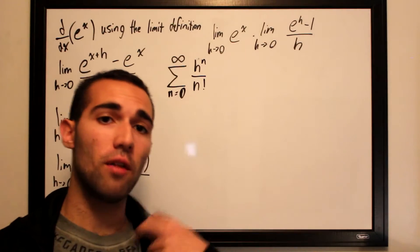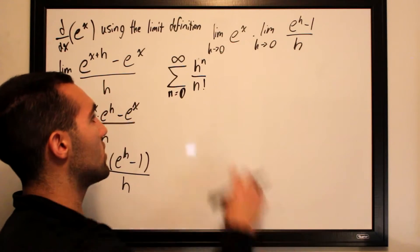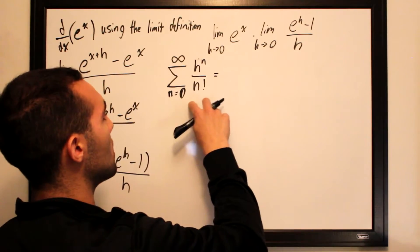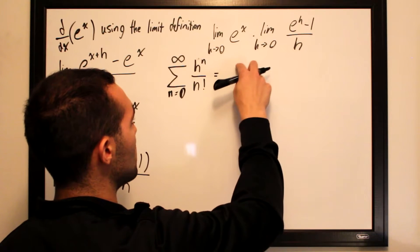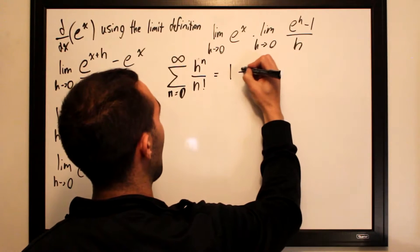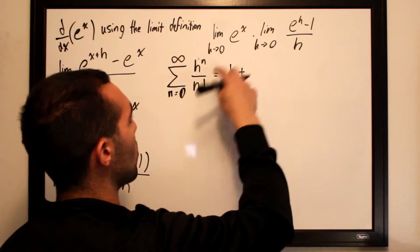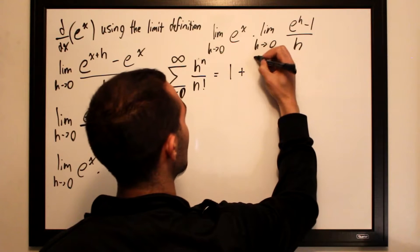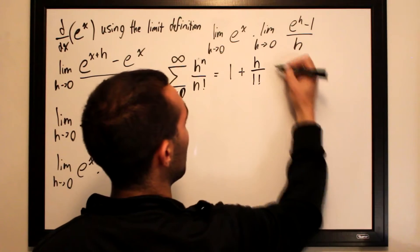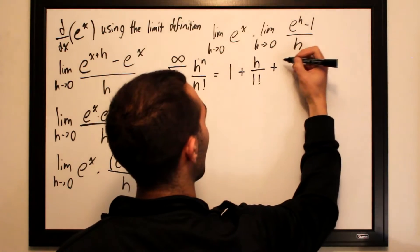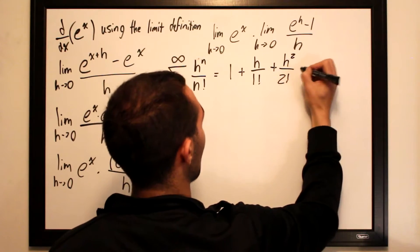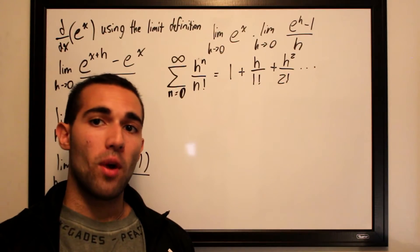Writing out the first few terms of this series: when n equals 0, we get h to the 0 over 0 factorial, which is 1. When n equals 1, we get h to the 1 over 1 factorial, which is h. Then h squared over 2 factorial, and so on — it continues forever.